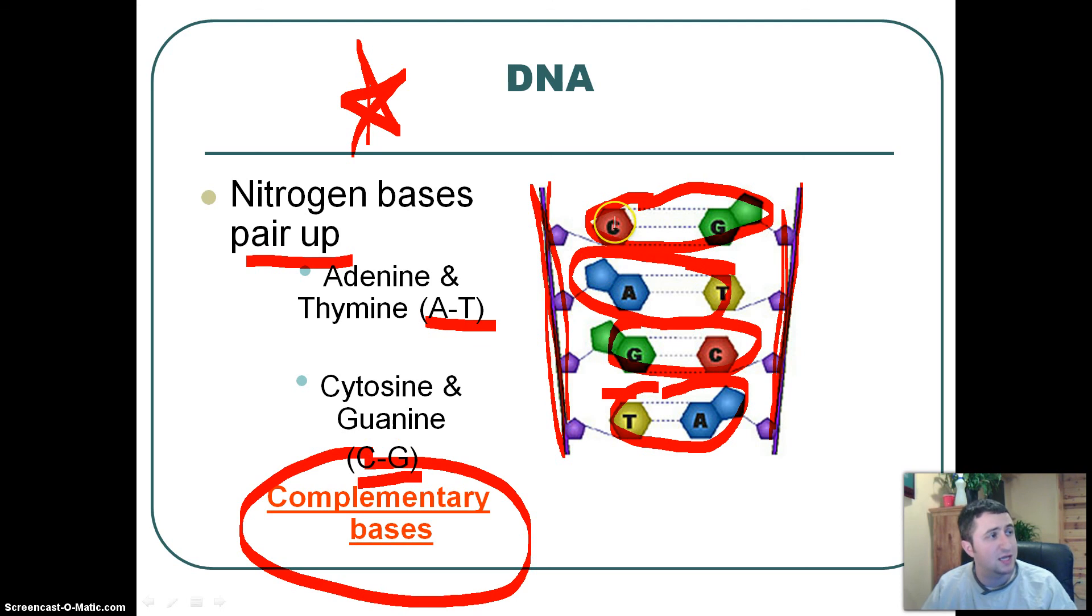So that means if I had a C on this side, an A on this side, a G on this side, a T on this side, you can always figure out what is going to be on this side just based on what you find over here.